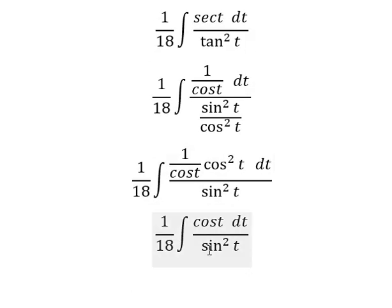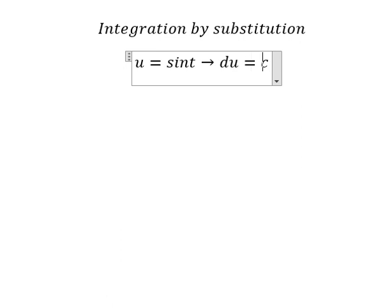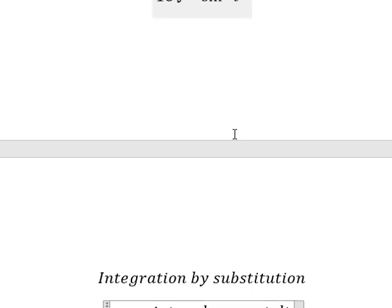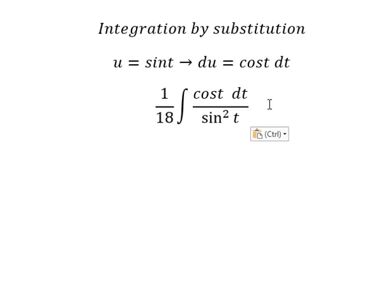So I will put u equals sine t. Later, we need to differentiate both sides, and we get du equals cosine t dt. So this one will change for u, this one will change for du.